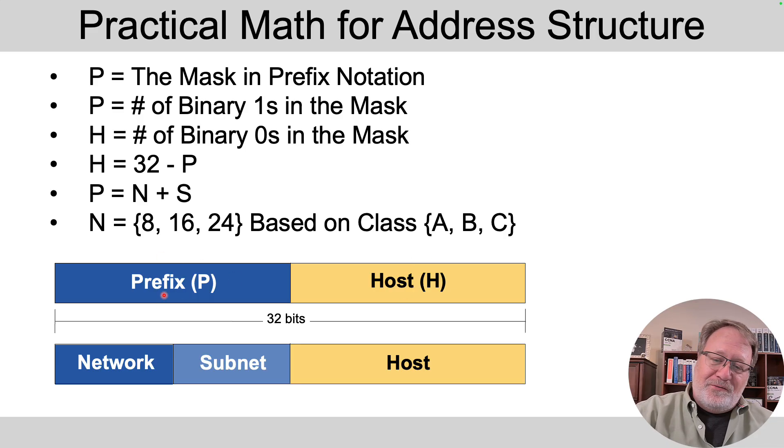Then if you do know the number of prefix bits, i.e. you've been given slash 24 as the mask, you know that the number of prefix bits equals the sum of the network plus subnet bits. So that can help.